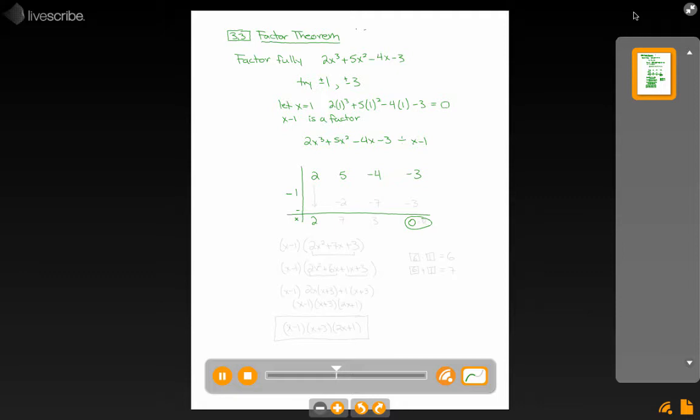So I set up the synthetic division here. I bring down my 2, multiply, I get negative 2, subtract, I get 7, multiply, I get negative 7, subtract, I get 3, multiply, I get negative 3, and subtract, I get 0, which confirms what I had figured out up above.